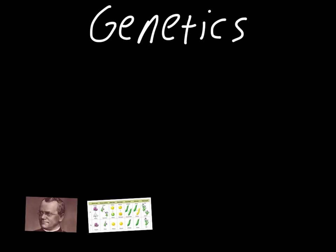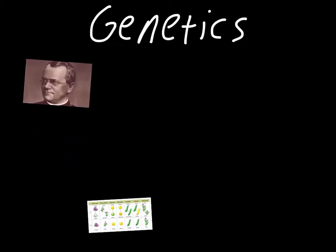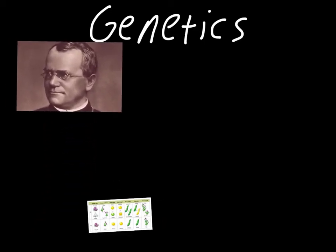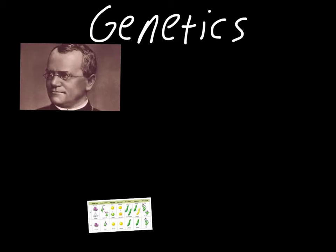The focus of this chapter is going to be on genetics. The first person we have to talk about when it comes to genetics is this guy. His name is Gregor Mendel. He's a little bit different than some of the other scientists we've talked about. He was actually a priest living in a monastery.